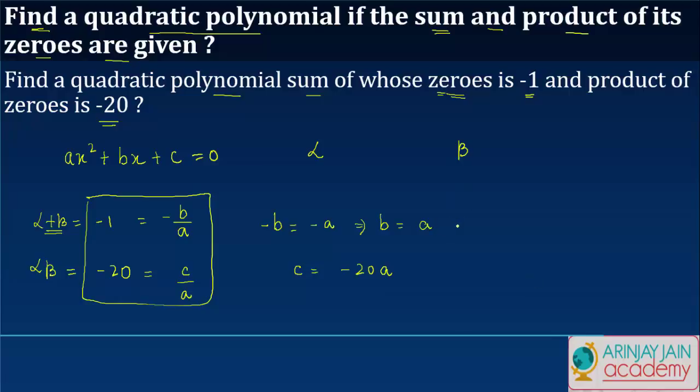If we assume the value of a as equal to 1, then we get b is equal to 1 and c is equal to minus 20. If we plug these values we get x squared plus x minus 20 is equal to 0.